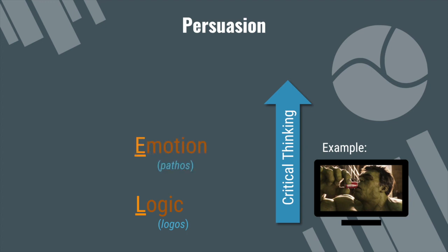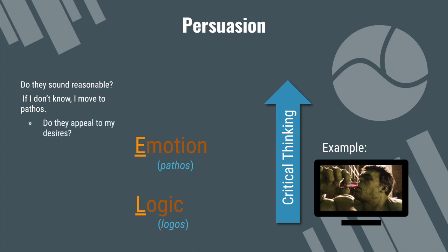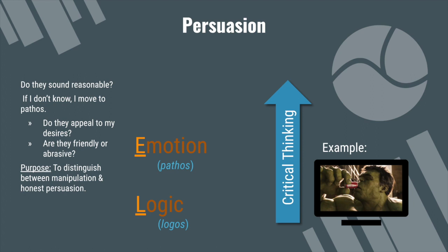How will the critical thinker think about pathos, the emotional aspect? The critical thinker will ask: do they sound reasonable? If I don't know, I move to pathos and ask: do they appeal to my desires? Are they friendly or abrasive? In other words, we're trying to figure out — are they interested in something that's going to benefit me, or are they just trying to get something out of me? Do their motives show that they are interested in honest persuasion — something that's good for me — or is it a manipulative tactic? The purpose is to distinguish between manipulation and honest persuasion, and to catch logical fallacies.